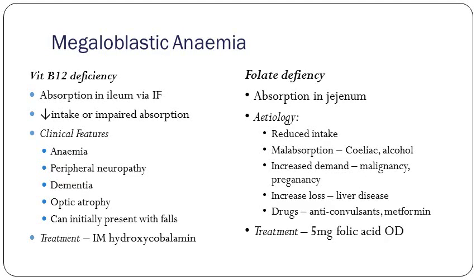Megaloblastic anemia can be either vitamin B12 or folate deficiency. Vitamin B12 — the most common causes are reduced intake or impaired absorption. The patient presents with classic anemia features, peripheral neuropathy, dementia, optic atrophy, and can initially present with falls. Treatment is with IM injections of hydroxycobalamin. Folate deficiency — reduced intake, malabsorption, increased demand, increased loss, and drugs such as anticonvulsants. Treatment: five milligrams of folic acid once a day.